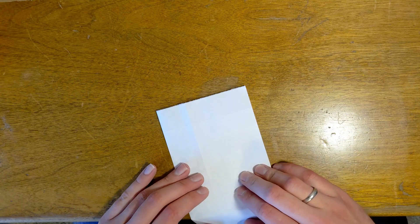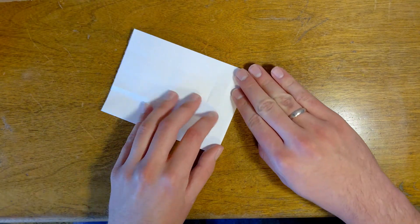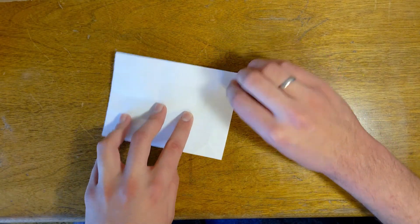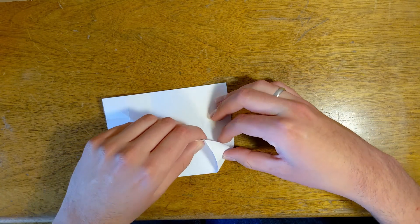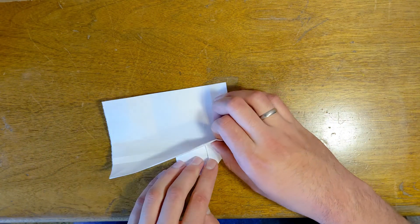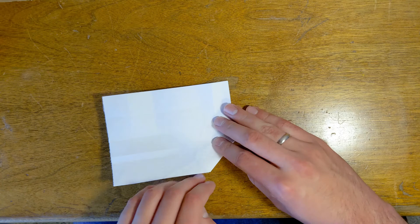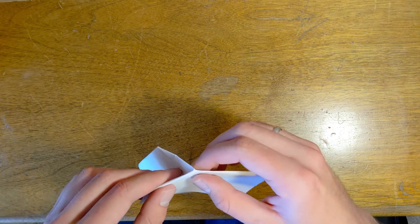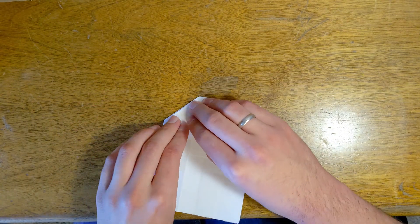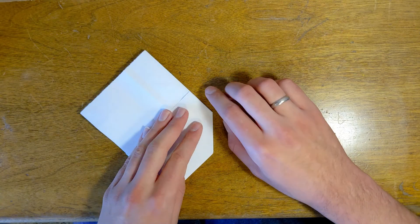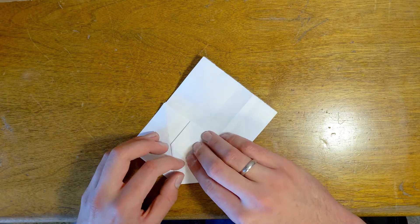After that you'll fold it in half and folding it along the line we just made, we'll then inside reverse fold this part. It's going to help create the square that connects the middle flaps on the back of Sonic.